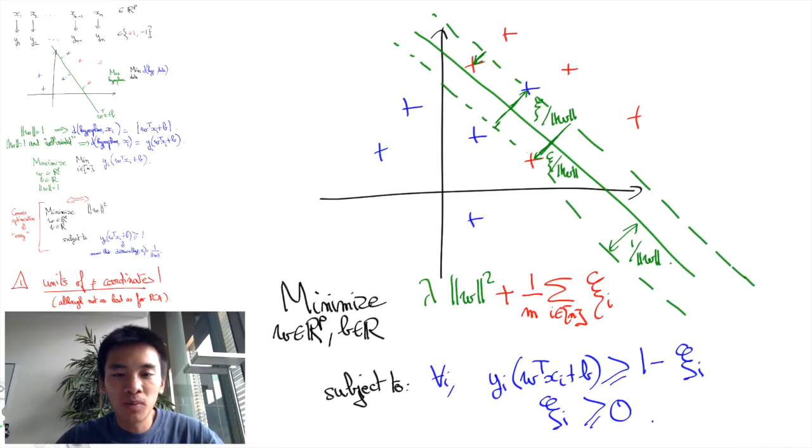And just to make sure we computed xi i well, we're going to add the constraint that yi times W transpose xi plus b is greater or equal to 1 minus xi i, where xi i are non-negative.